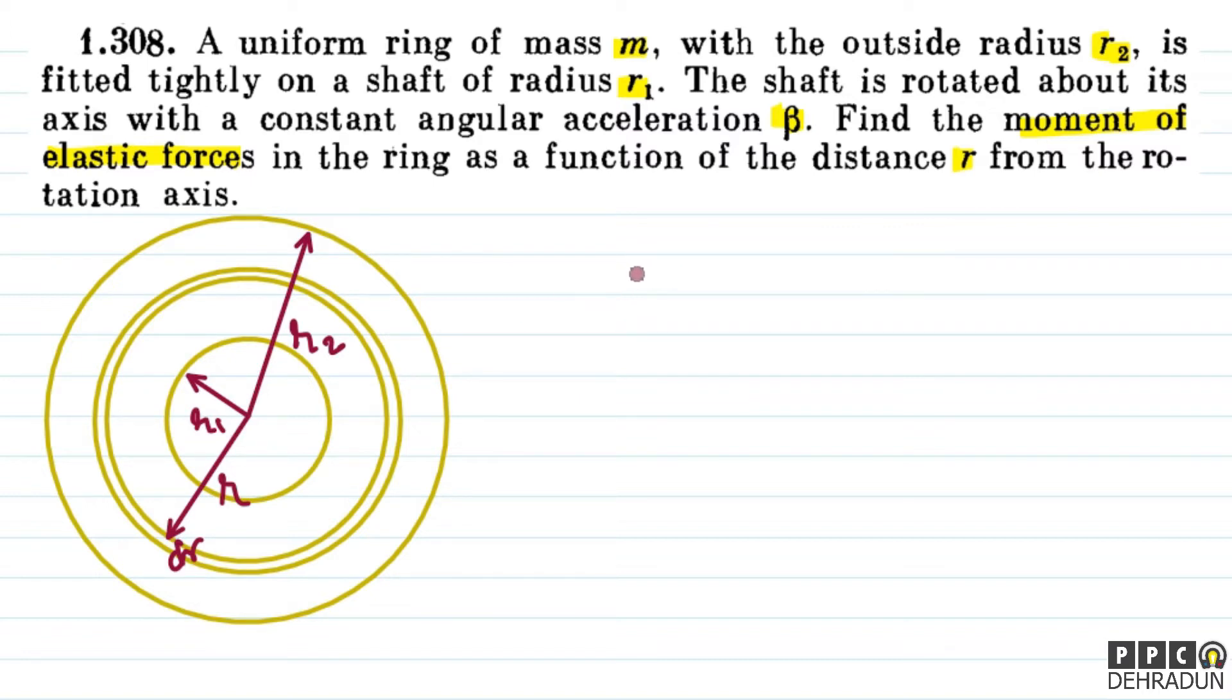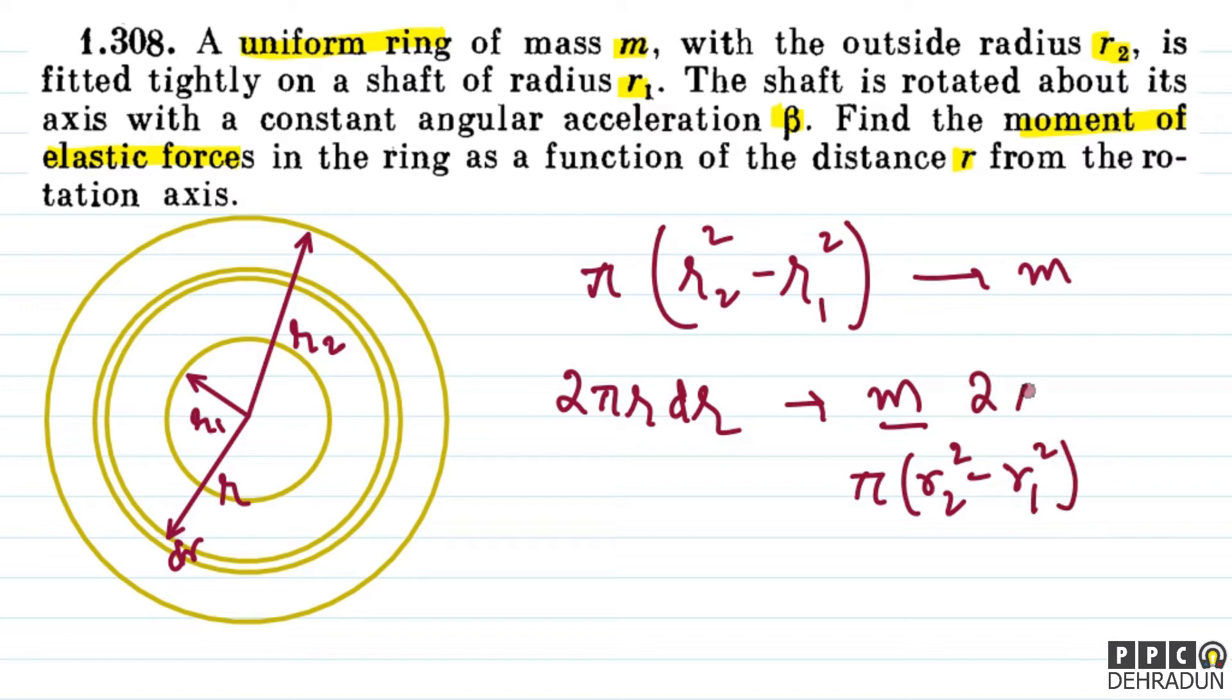So, what will be its mass? Let's think about it. The mass will be m upon pi r2 square minus r1 square multiplied by 2 pi r dr. So, pi cancels out. This term that we got is basically dm.